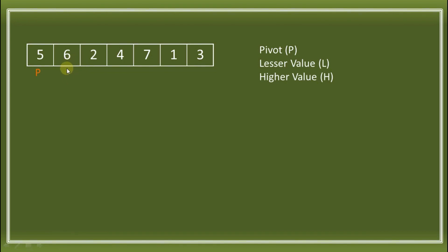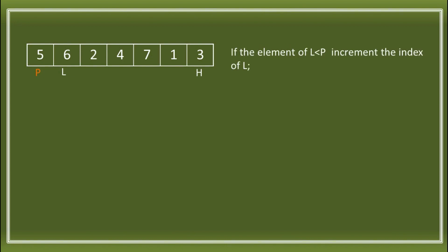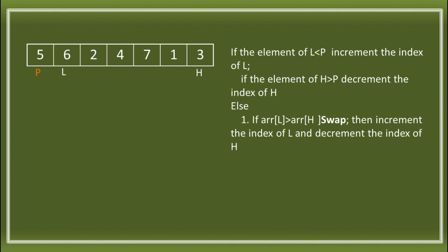The lesser value L always starts on my left. So 6 is the lesser value — it's not at the very first element because the first element is the pivot. The higher value H is the last element. Now, using QuickSort, we follow this simple algorithm: if the element of L is less than P, increment the index of L. If the element of H is greater than P, decrement the index of H. If the element of L is greater than the element of H, we swap, then increment L and decrement H. If the index of L is greater than the index of H, stop the partition.